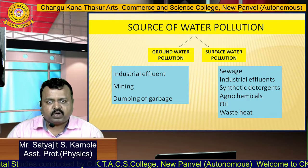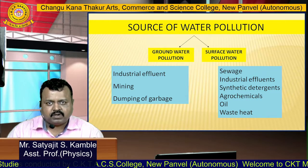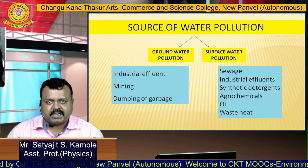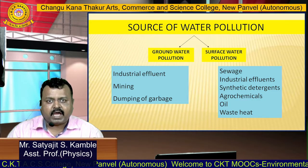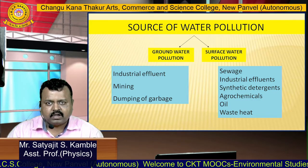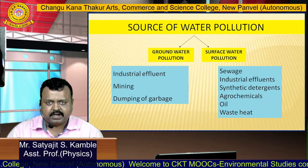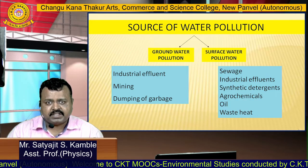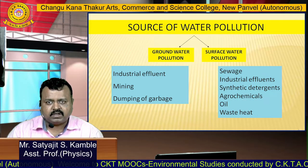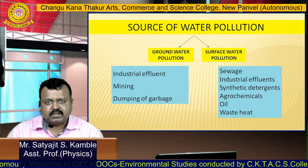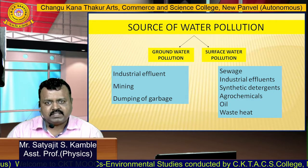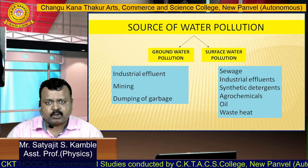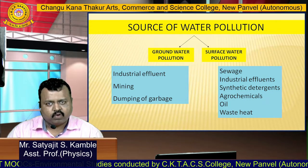Surface water pollution is caused by sewage, industrial effluents, synthetic detergents, agrochemicals, oil, and waste heat. Waste heat means when any industry discharges water at a very high temperature. All these factors are responsible for water pollution.